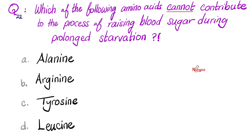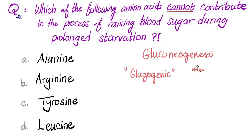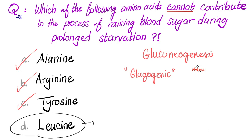If an amino acid is going to raise my blood sugar, it can only do so by gluconeogenesis. And when an amino acid contributes to gluconeogenesis, we call it a glucogenic amino acid — gluco means glucose, i.e. blood sugar, and genic from genesis, formation. Which of these are glucogenic? Alanine is, arginine is, tyrosine is. But the question asks which cannot — the one that cannot is leucine, because leucine is not glucogenic. Leucine is a ketogenic amino acid instead.